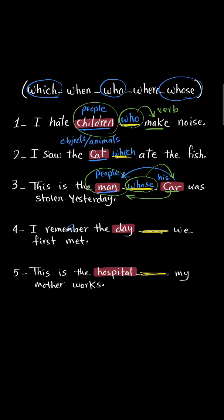Number four: I remember the day. Look guys, 'day' is a time word, and time takes 'when.' Directly write 'when' without hesitation. But make sure that what comes next happens on that day — like 'we first met' on that day. So 'when' is perfectly placed here: I remember the day when we first met.